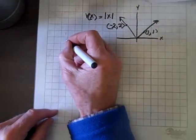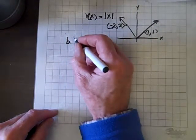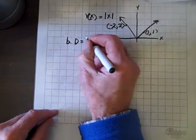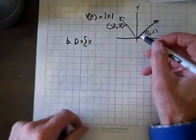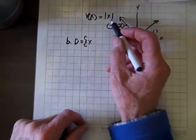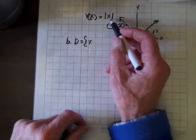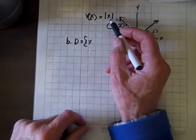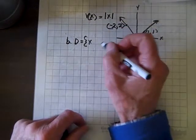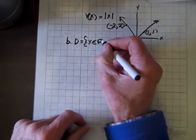As to the domain, D = {x}, and clearly there's no possibility of division by zero. There is no possibility of taking an even radical of a negative number, so the domain is all reals, or x ∈ ℝ.